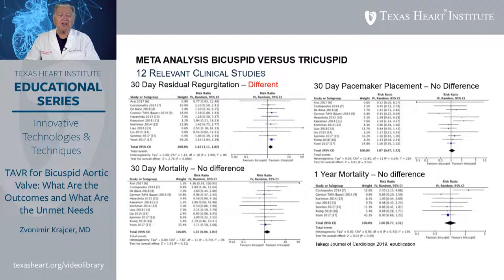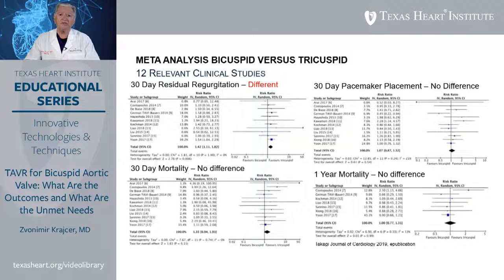A meta-analysis of bicuspid versus tricuspid valve collected 12 relevant clinical studies. The only significant difference between the two entities was the incidence of residual regurgitation at 30 days, which was significantly higher in patients with bicuspid aortic valve. There was no difference in mortality at 30 days or at one year, and also no difference in the need for permanent pacemaker implantation.